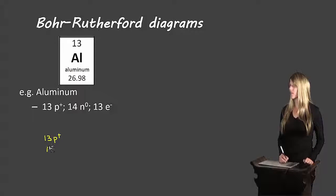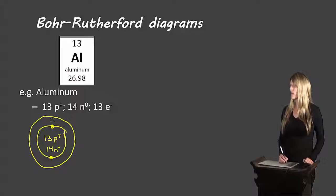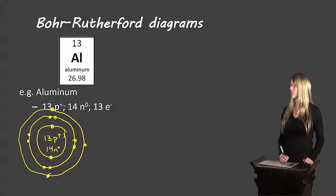13 protons, 14 neutrons, and in our first shell we can fit one, two electrons. So that's our first shell. Our second we'll have our third, fourth, fifth, sixth, seventh, eighth, ninth, and tenth electron. And our third shell here will have our eleventh, twelfth, and thirteenth electron. So there's our 13 electrons.